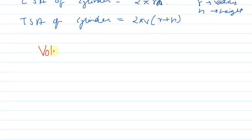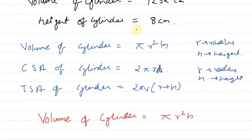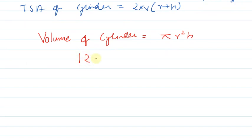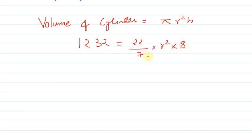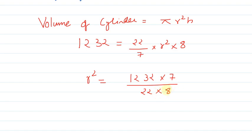We are given volume of cylinder is equal to pi r squared h. The volume given to us is 1232 centimeter cube, so 1232 is equal to pi, that is 22 upon 7, times r squared, times h. Height is eight centimeters, so h is equal to 8. Solving further, r squared is equal to 1232 times 7 upon 22 times 8.